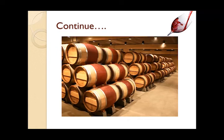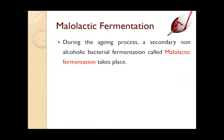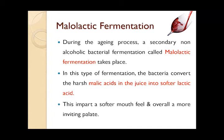These are the oak wood barrels in which wines are kept for maturing and aging. During this aging period, a secondary fermentation takes place in the oak wood barrels, called malolactic fermentation. Malolactic fermentation is a non-alcoholic bacterial fermentation in which bacteria convert the harsh malic acid in the juice into a softer lactic acid, imparting a softer mouthfeel and a more inviting palate.